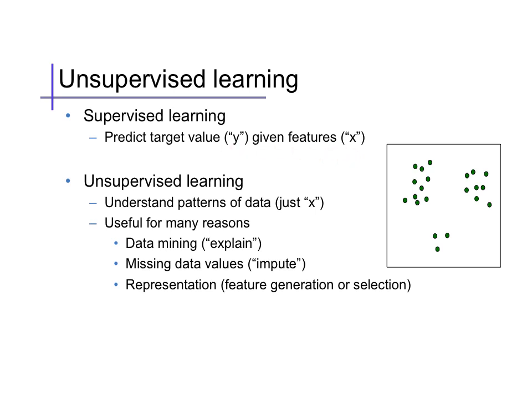In unsupervised learning, in contrast, we have no particular target variable y. Instead, the task is just to understand the data, identify patterns, and so on. Thus, we assume we have only the set of features x that we'd like to use to understand these patterns.